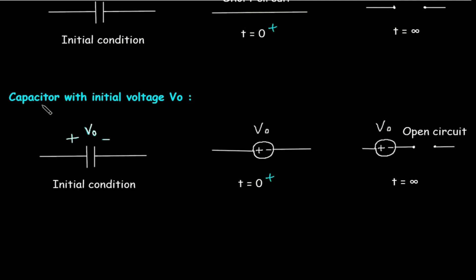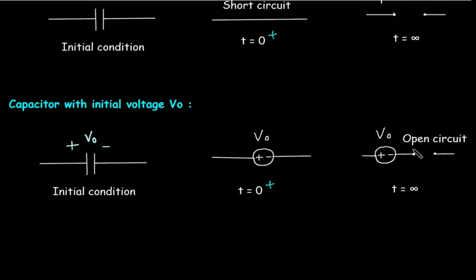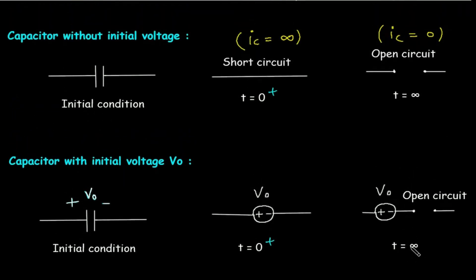When the capacitor has an initial voltage Vo, at t=0⁺ the same voltage Vo will be present across the capacitor. At t=∞, it will be Vo in series with an open circuit — so at t=∞ the capacitor behaves like Vo in series with an open circuit.